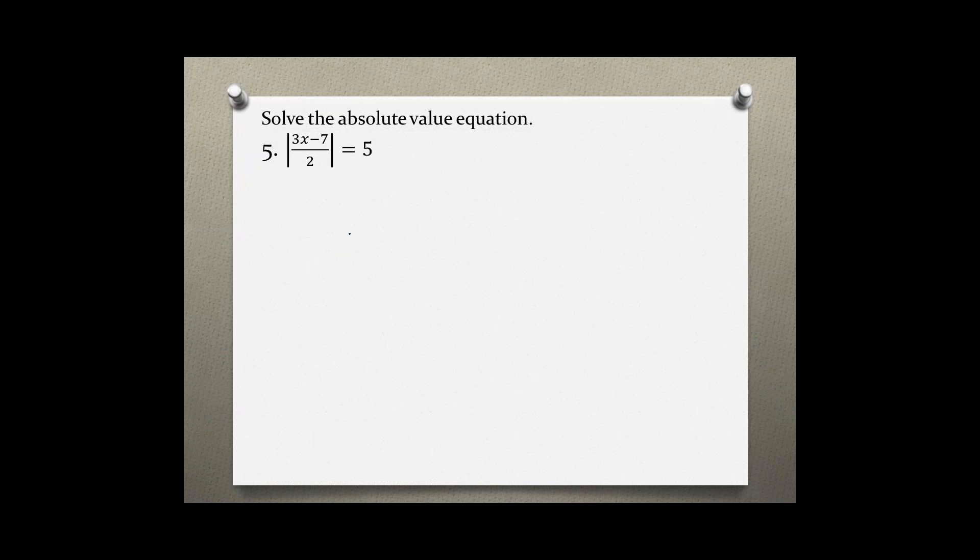Solve the absolute value equation. This is problem number 5. The absolute value of 3x minus 7 over 2 equals 5.